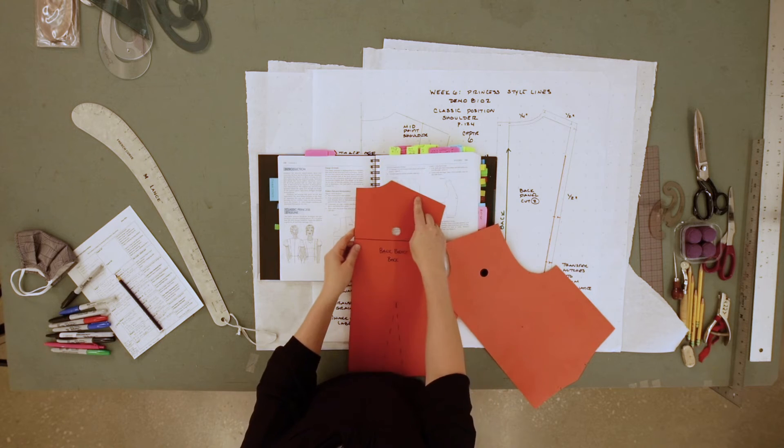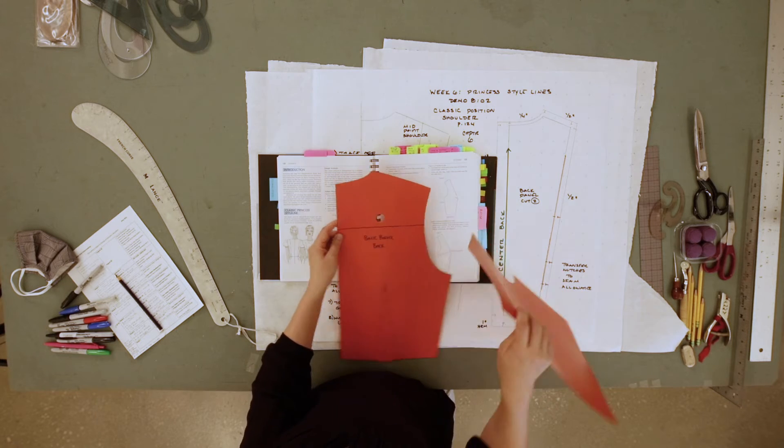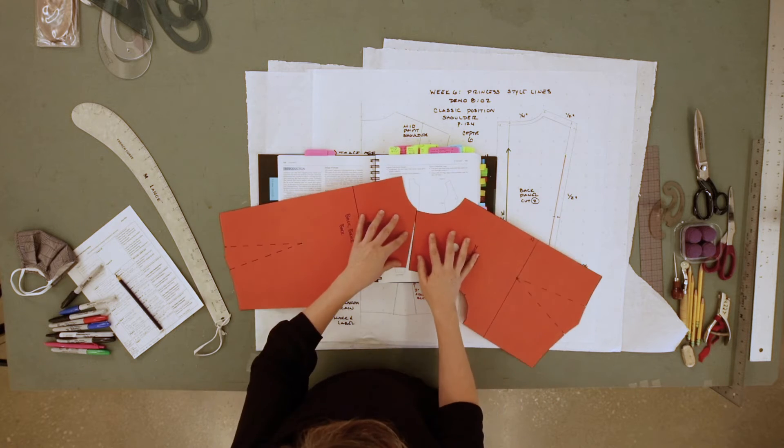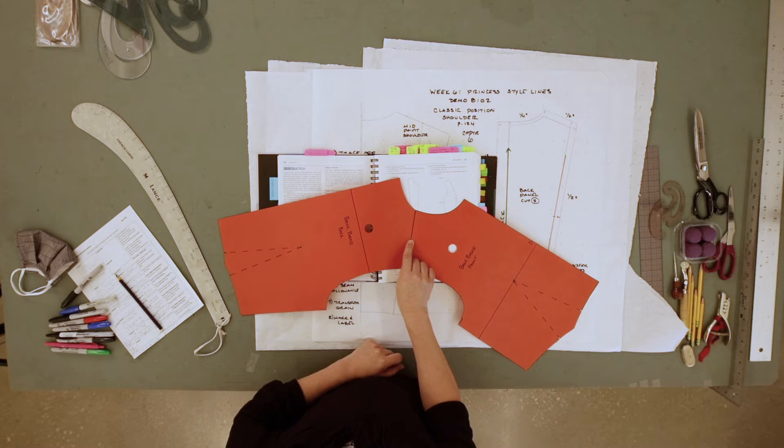When you are generating your back princess line, they are going to line up so that the front and the back are going to have the same style line when you put the two necklines together.